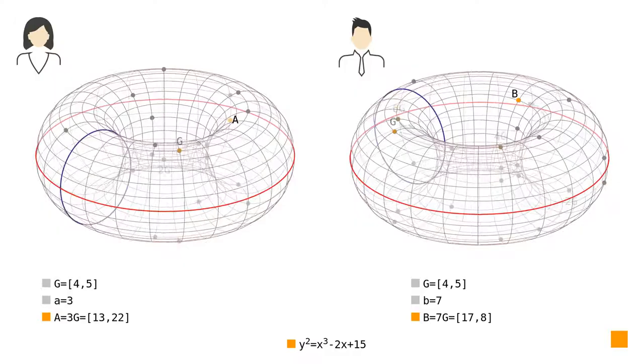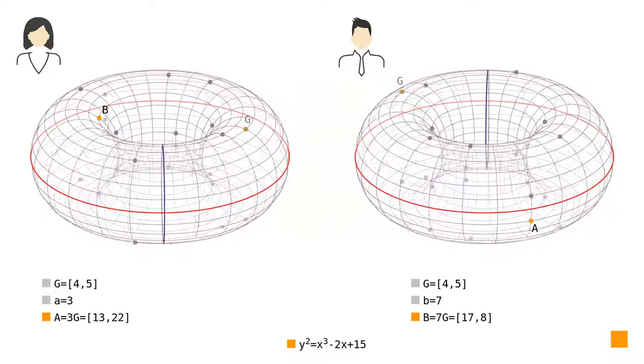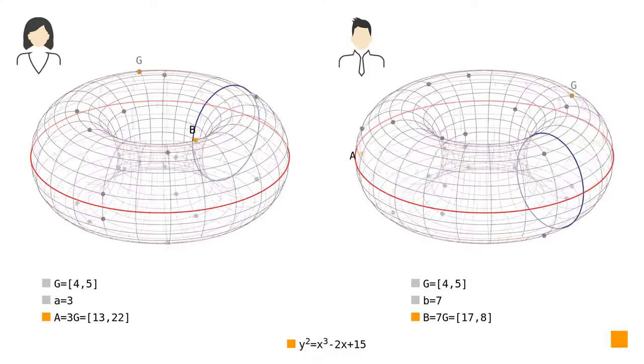With their public points available, Elise and Bob exchange them. As you can see, Elise doesn't know that B equals 7G, and Bob doesn't know that A equals 3G.